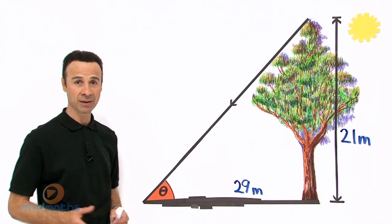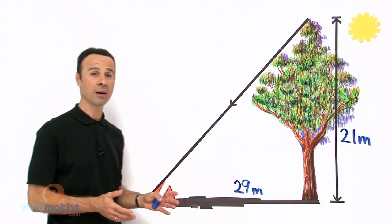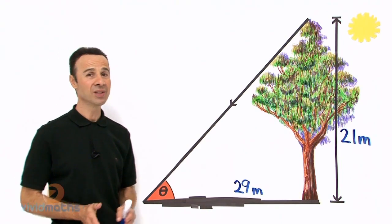So let us write down now what we want to find, and the first step is to find which trig ratio is it. Now based on what we have, is it a sine, is it a cos, or is it a tan?